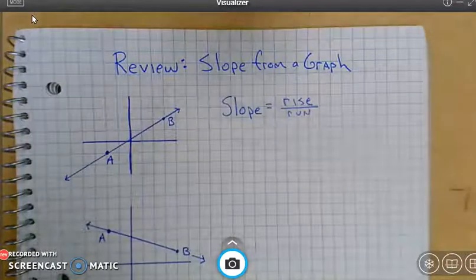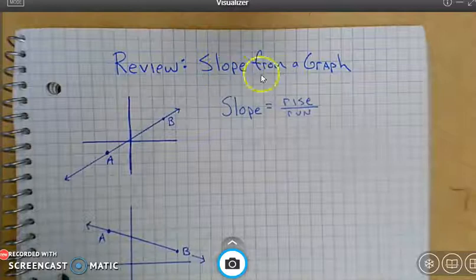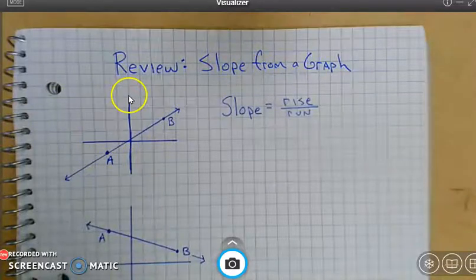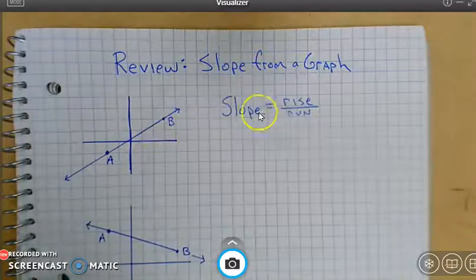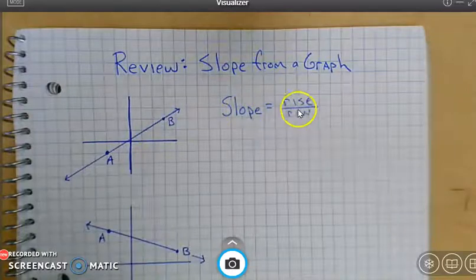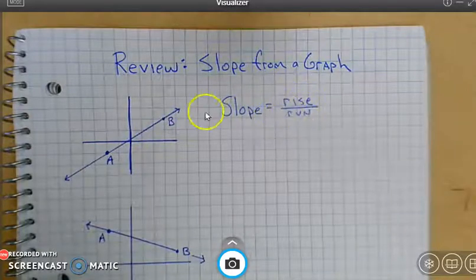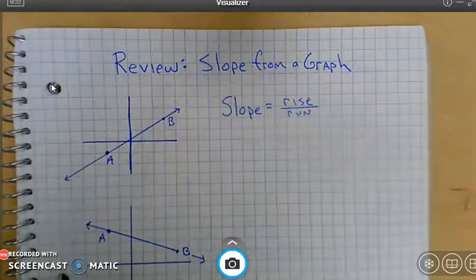This first section will hopefully go super quickly, reviewing slope from a graph. So as you can see we have a graph here with points A and B, and we remind ourselves that the slope is the ratio of the rise over the run. That's what we're going to start looking at.